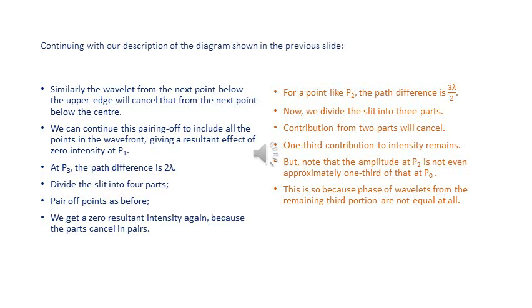Now for a point like P2, the path difference is 3λ/2. If we divide the slit into three parts, the contribution from two parts will cancel, but a contribution of one-third to the intensity shall still remain. Note that the amplitude at P2 is not one-third of the amplitude visible at P0, because the phases of the secondary wavelets coming from the remaining third portion are not equal to those coming to P0.